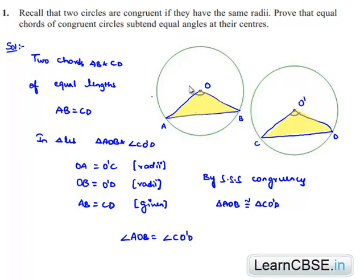Therefore, equal chords of congruent circles subtend equal angles at their centers. That is proved.